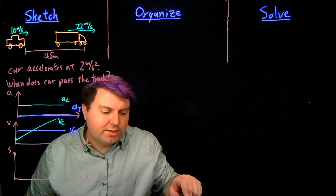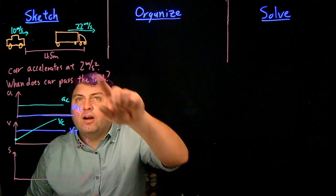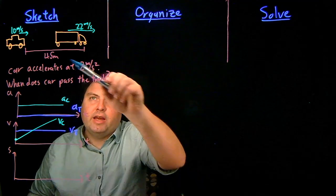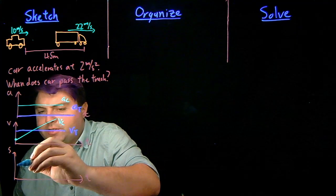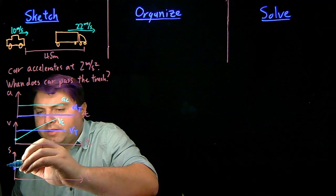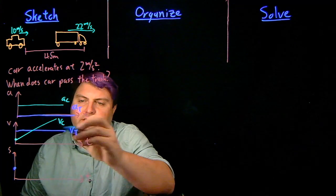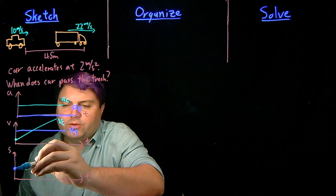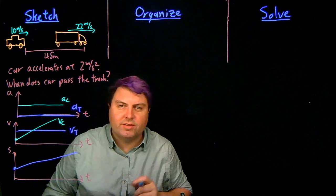And then in our position versus time graph, our truck starts at a larger initial position. So we can kind of write something like this. And then it just has a nice positive constant slope, something of this sort.